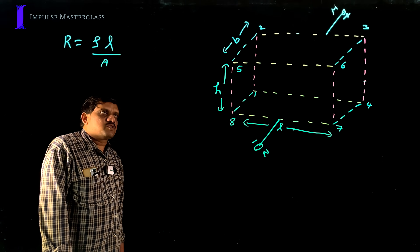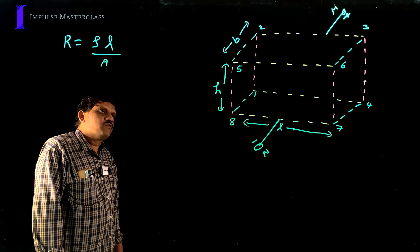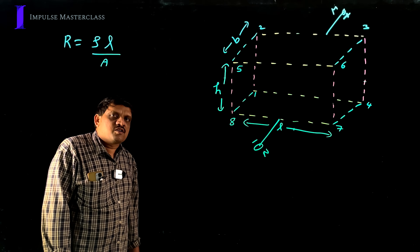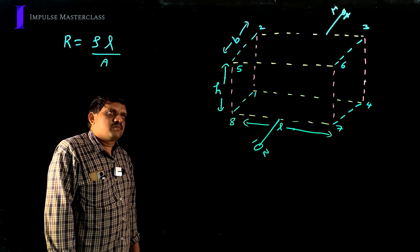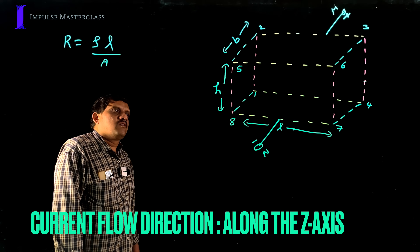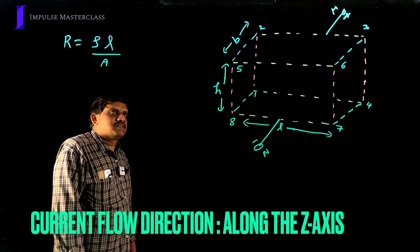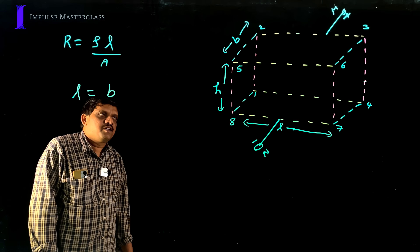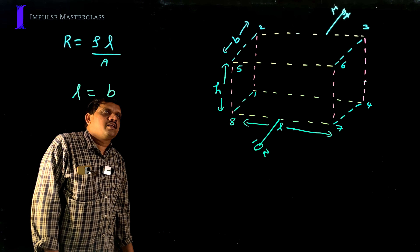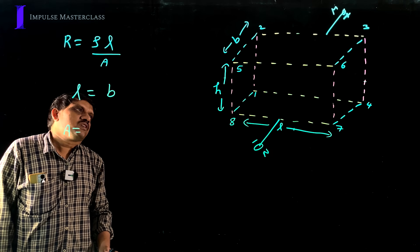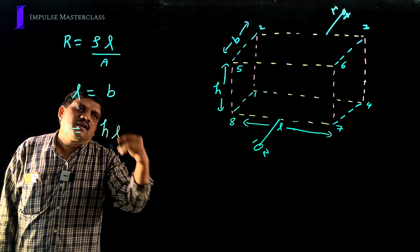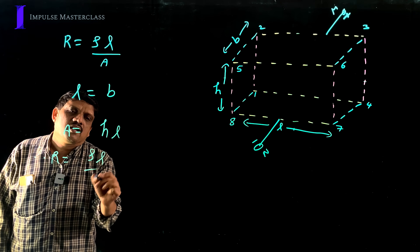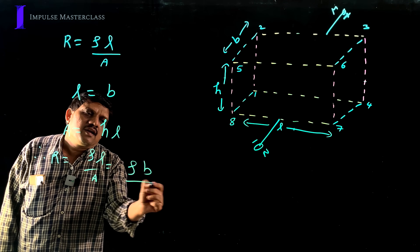In the next case, suppose we apply higher potential to face 1234 and lower potential to face 5678. Current flows from face 1234 toward face 5678. Therefore, the length along the current flow equals B. The cross-sectional area perpendicular to the current flow is face 1234, which equals H times L. Therefore, resistance of the cuboid in this case is R = ρB/(H×L).